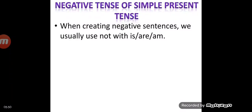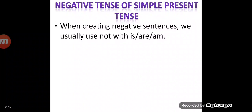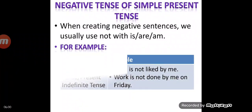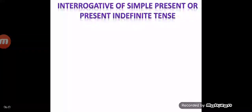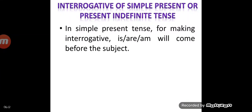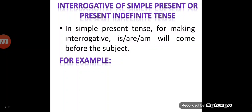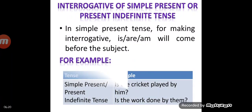For the negative of simple present tense in passive voice, we use 'not' with is/am/are. For example: 'Food is not liked by me,' 'Work is not done by me on Friday.' For making it interrogative, the helping verb comes before the subject. For example: 'Is cricket played by him?' 'Is the work done by them?'